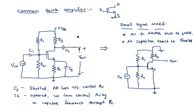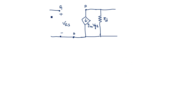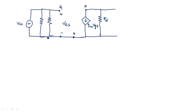Now we add the external circuit components. From gate to ground, we have R1 and R2 (in parallel) and the input voltage source VIN — that's two resistors and one voltage source, with R1 and R2 in parallel. On the output side, from drain to ground we have RD (the drain resistor), and across it we take the output voltage Vout.